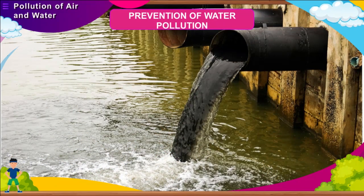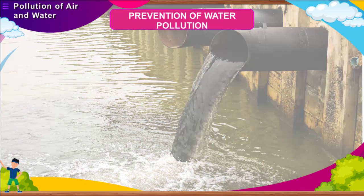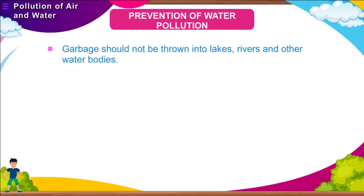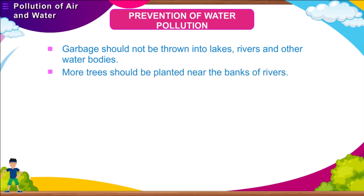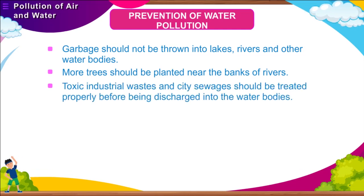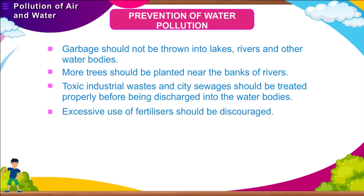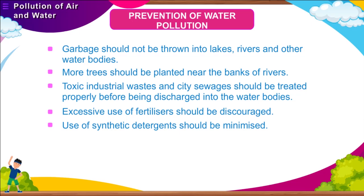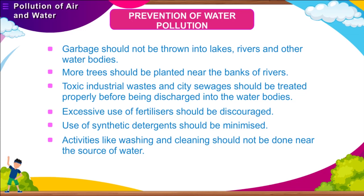Prevention of water pollution. Some steps that must be taken to prevent water pollution: garbage should not be thrown into lakes, rivers and other water bodies; more trees should be planted near the banks of rivers; toxic industrial wastes and city sewage should be treated properly before being discharged into water bodies; excessive use of fertilizers should be discouraged; use of synthetic detergents should be minimized; and activities like washing and cleaning should not be done near the source of water.